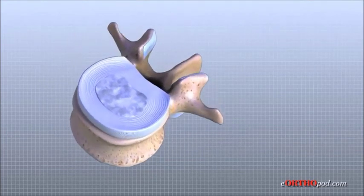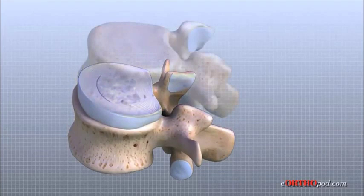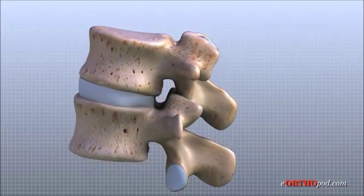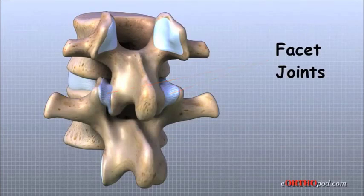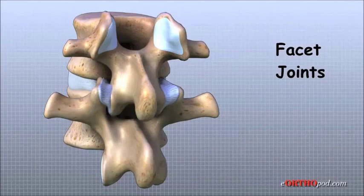Between the vertebrae of each spinal segment are two facet joints. The facet joints are located on the back of the spinal column. There are two facet joints between each pair of vertebrae, one on each side of the spine. A facet joint is a small, bony knob that sticks out from the vertebral body at the back of the lumbar spine.